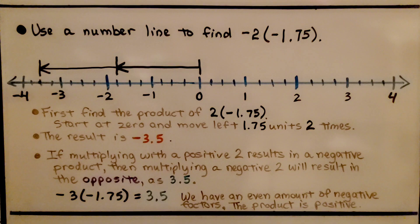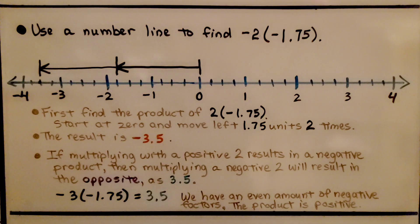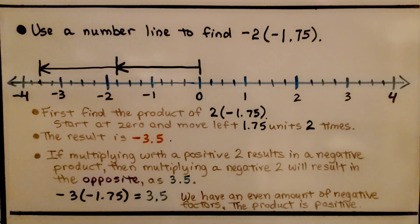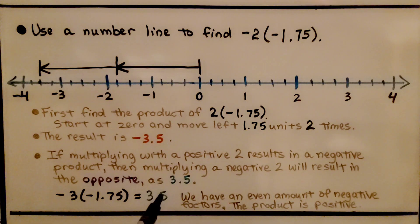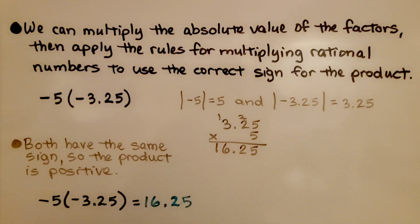If multiplying with a positive 2 results in a negative product, then multiplying with a negative 2 will result in the opposite — a positive 3 and 5 tenths. We have an even number of negative factors, so the product is positive. When factors have like signs, the product is positive.